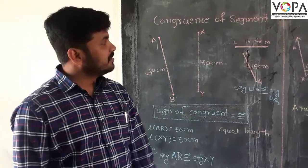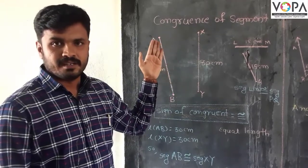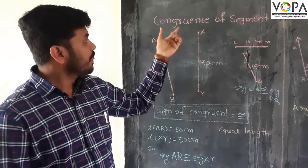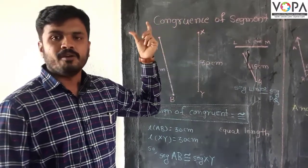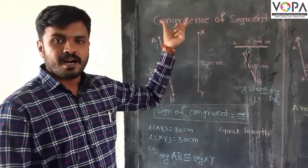Hello students, now this is the last period of our chapter on geometrical constructions. This is the last segment: congruence of segments, congruence of angles, and congruence of circles. Now the first one is congruence of segments.